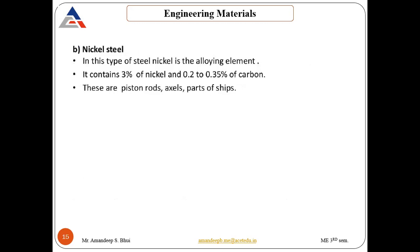The next type of alloy steel is nickel steel. It contains 3% nickel and 0.2 to 0.35% carbon. These are used in making piston rods, axles, and various parts of ships.